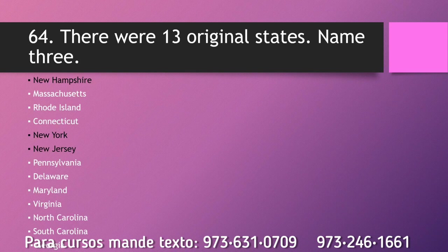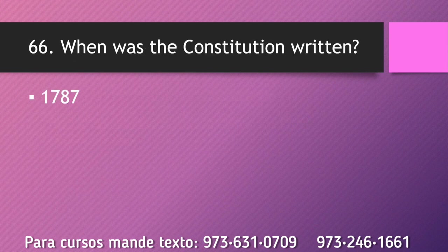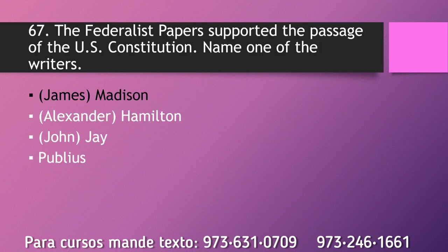There were 13 original states. Name three. New Hampshire. New York. New Jersey. What happened at the Constitutional Convention? The Constitution was written. When was the Constitution written? 1787.